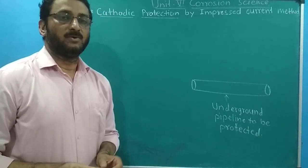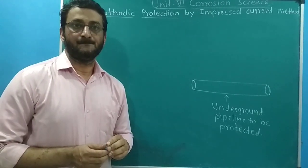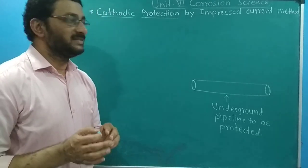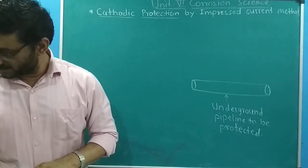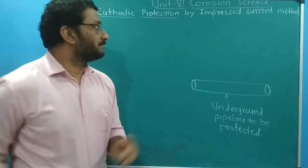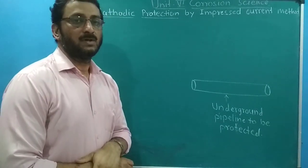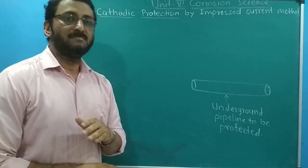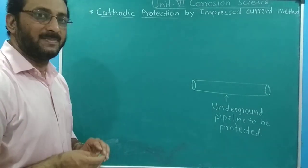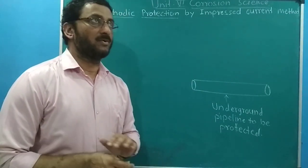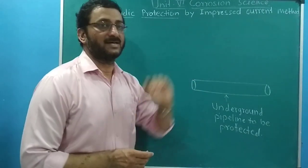Today's topic is the last topic of the unit: cathodic protection by impressed current method. In the earlier video I gave the explanation for cathodic protection by sacrificial anode. This is the second method — cathodic protection by impressed current method. In this method, impressed current is used to convert the corroding metal from anode to cathode. The basic idea of cathodic protection is to force the metal to behave like a cathode.